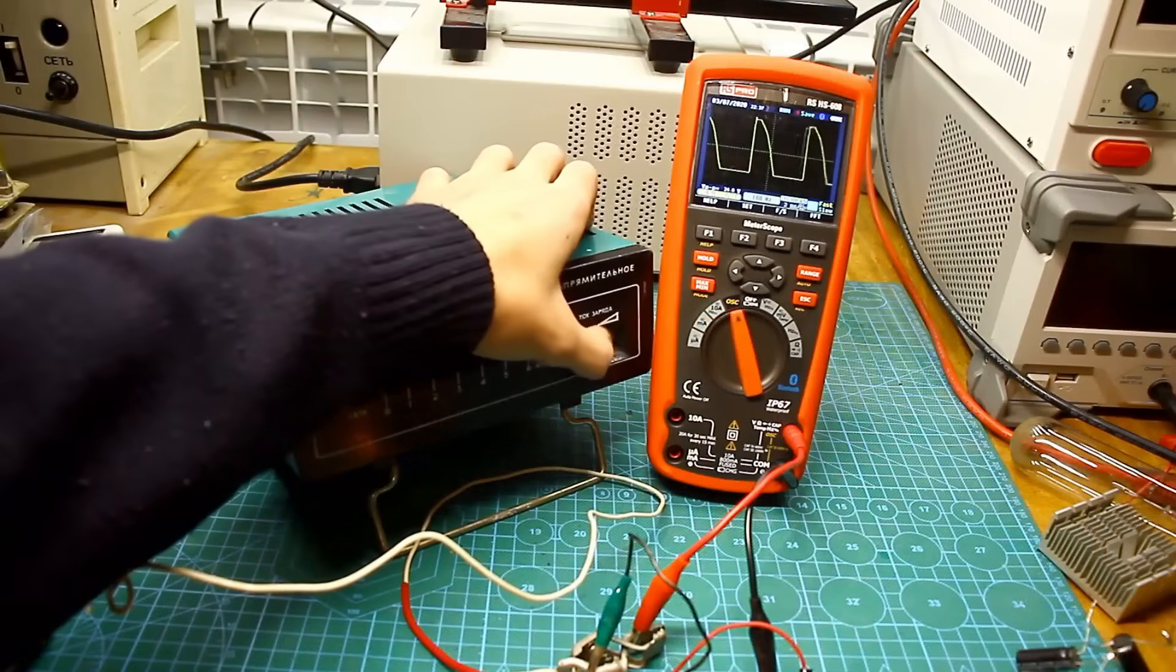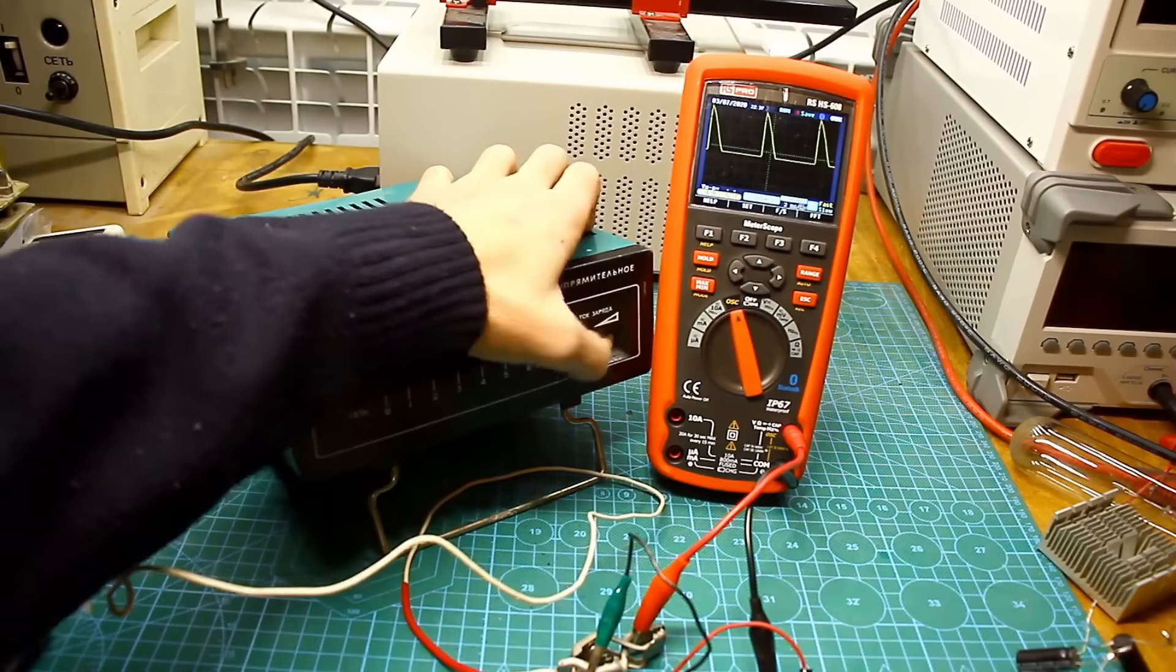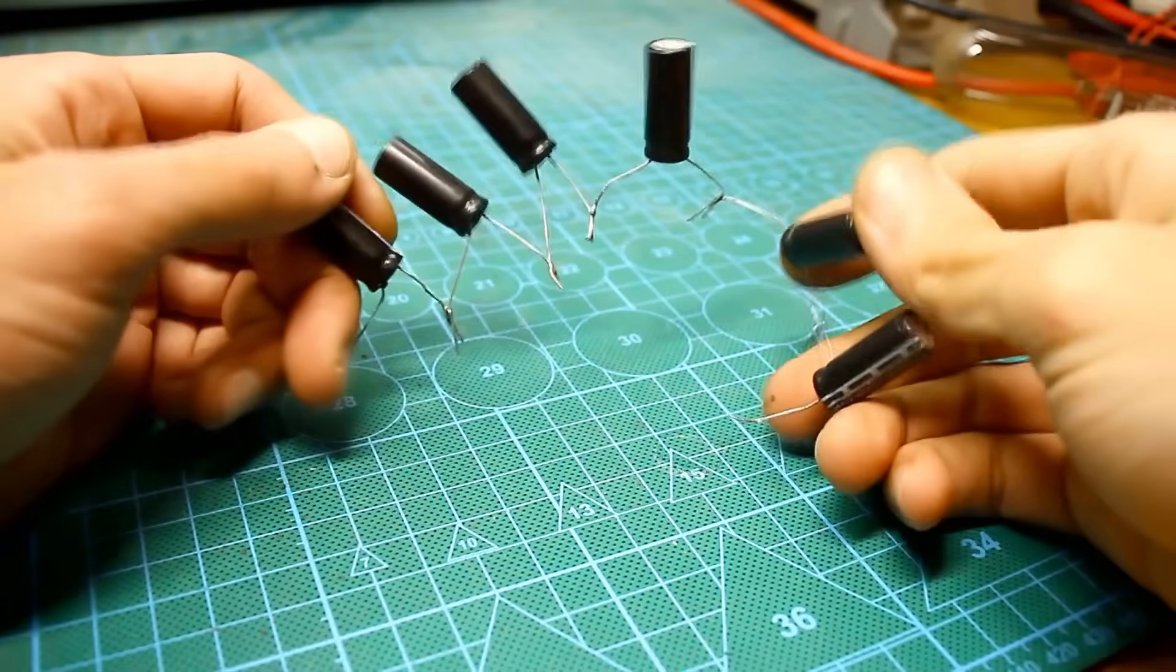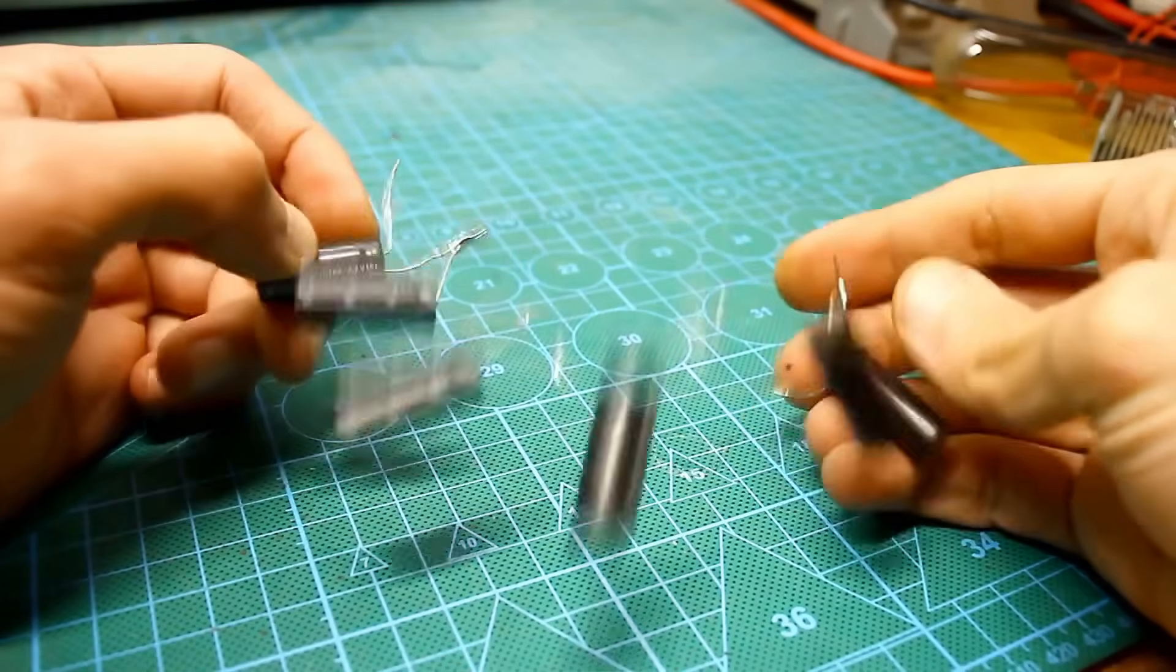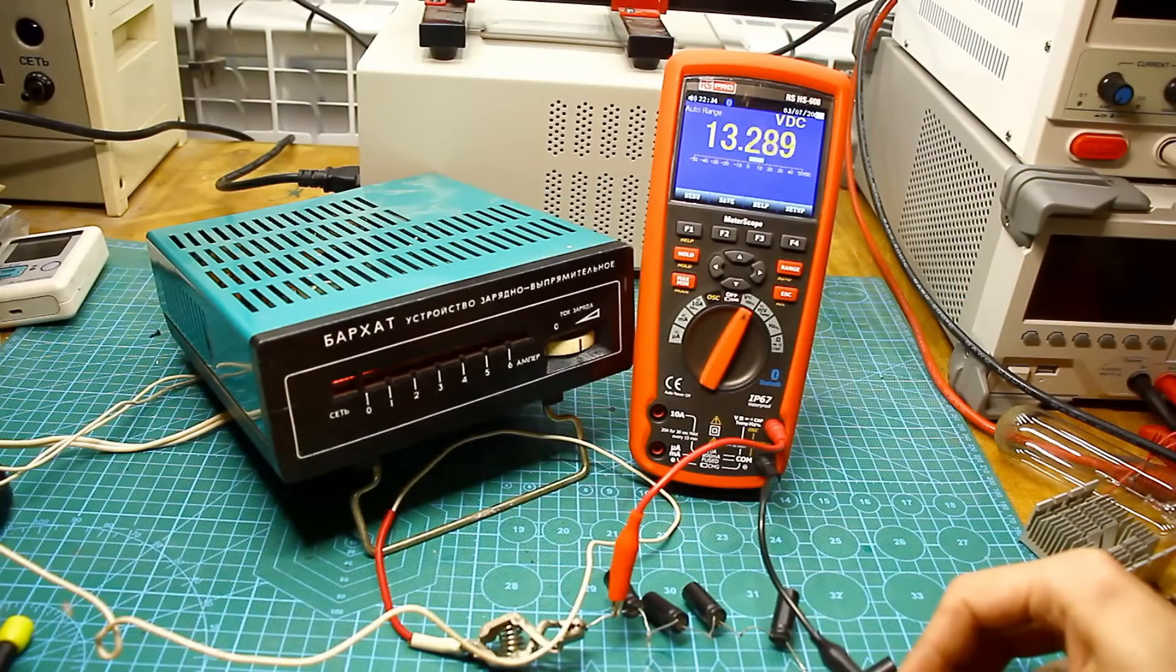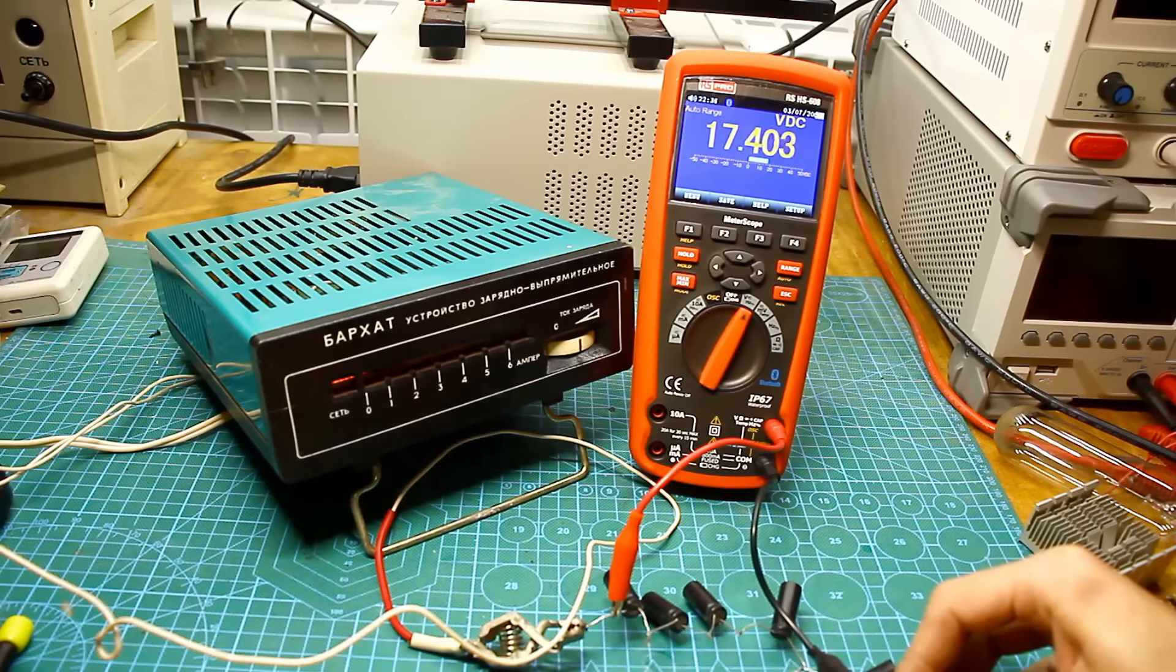The output voltage of such chargers is pulsating. They say that this waveform even helps in restoring batteries. In the end, I connected a battery of supercapacitors to the output of our charger. This will simulate a battery. As we can see, the device charged the improvised battery to a value slightly less than 18 volts. This is sufficient for almost any type of car battery. However, considering the lack of voltage stabilization, such a charger can overcharge the battery. So the process needs to be monitored.